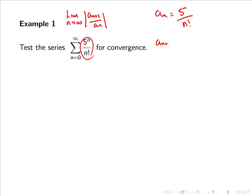And a_{n+1} is obtained by replacing n with n+1 in a_n. So we have 5 to the n+1 all divided by n+1 factorial.